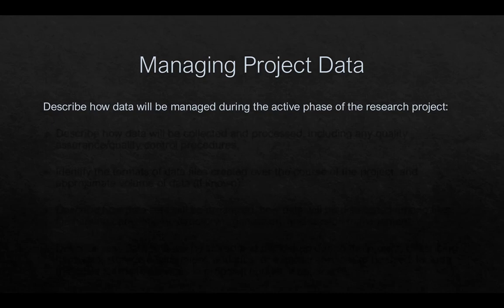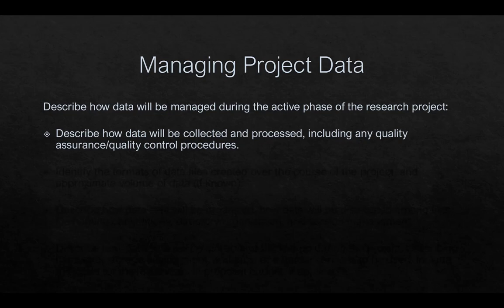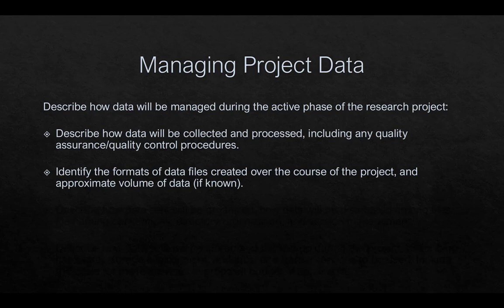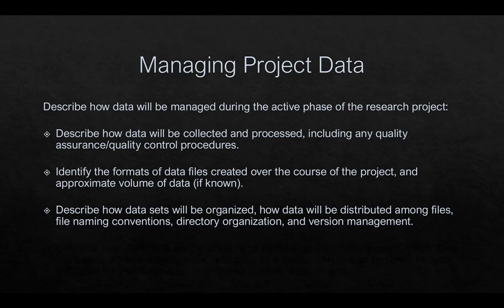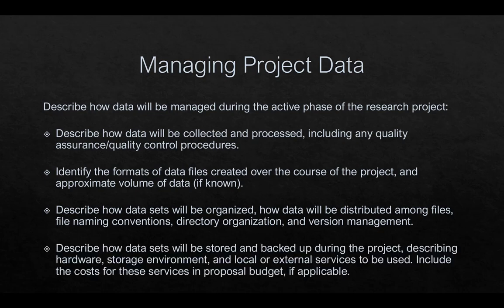Second, describe how the data will be managed during the active phase of the research project. This should describe how data will be collected and processed, including any quality assurance or quality control procedures. Identify the formats of data files created, including the approximate volume of data. Describe how datasets will be organized, how data will be distributed among files, file naming conventions, directory organization, and version management. And describe how datasets will be stored and backed up during the project, including hardware, storage environment, and local or external services to be used.